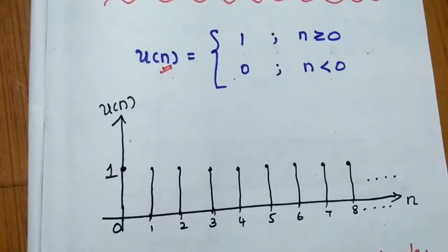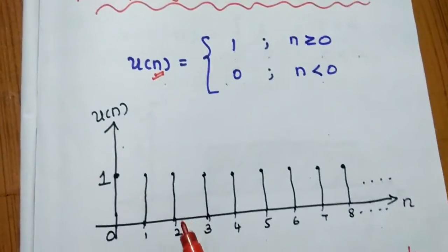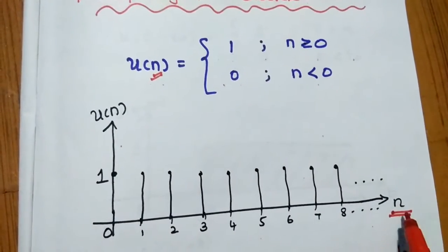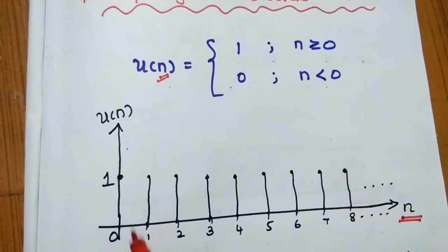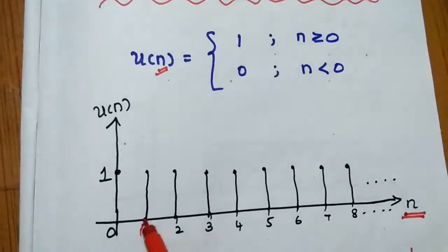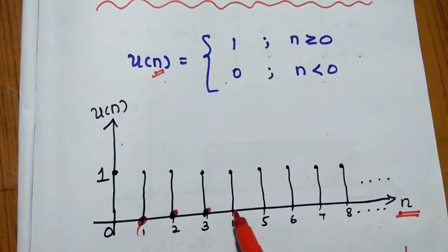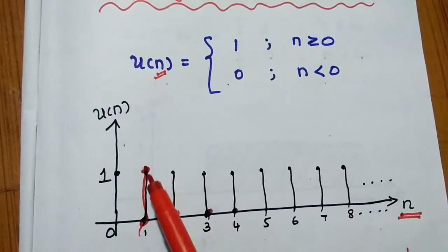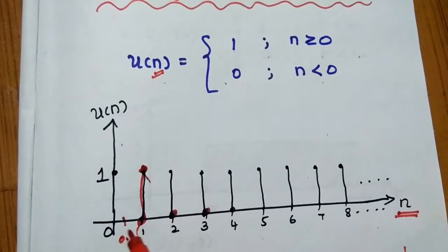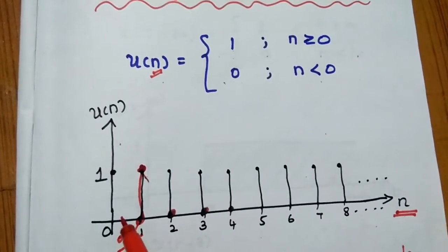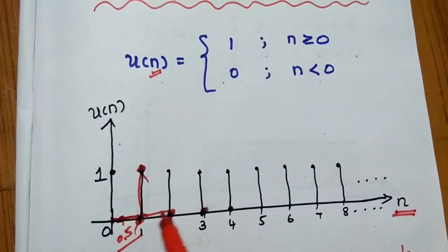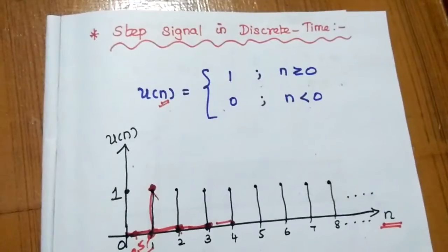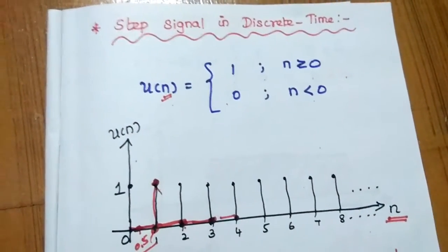In the diagrammatic representation, the X axis is time, where time samples are denoted by N, and the Y axis is magnitude. At particular instances alone we have that value — for example, at N equal to 1 the value is 1. If we say N equals 0.5, there is no value; it is 0. So at particular time instances alone we have values. This is the step signal in terms of the discrete time domain.